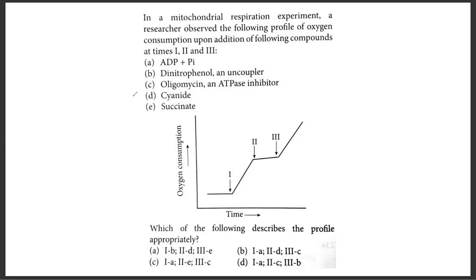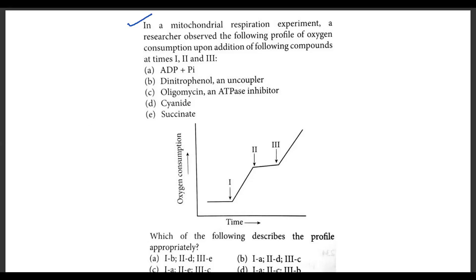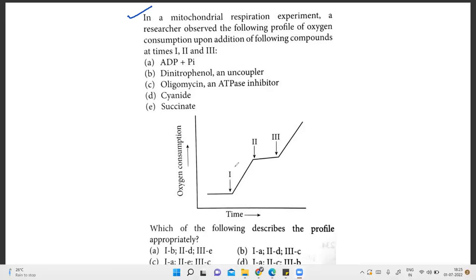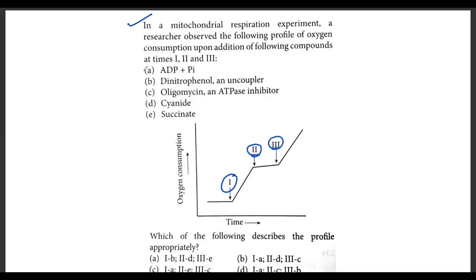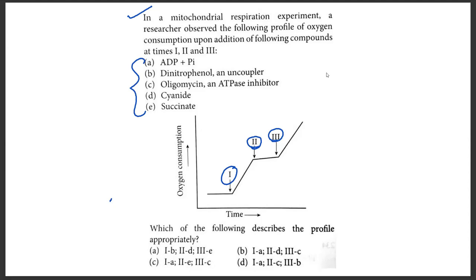In the given question, they said that in a mitochondrial respiration experiment, a researcher observed the following profile of oxygen consumption upon addition of three compounds. They have given you three different arrows on this graph: compound 1, compound 2, and compound 3, with five different options of what these compounds could be. They're asking which profile best describes these.